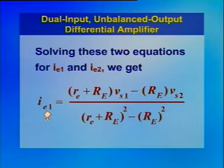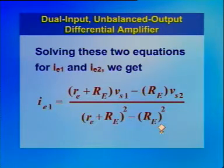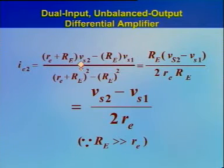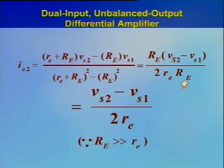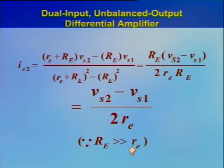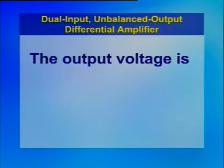Solving these two equations for IE1 and IE2 using Cramer's rule, we get IE1 equal to (RE plus RE)·VS1 minus RE·VS2 divided by (RE plus RE)² minus RE². This simplifies to RE·(VS1 minus VS2) divided by (2RE·RE), because RE is very much greater than the T-equivalent resistance re. Therefore, IE2 simplifies to (VS2 minus VS1) divided by 2RE.